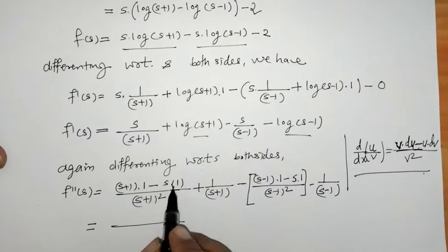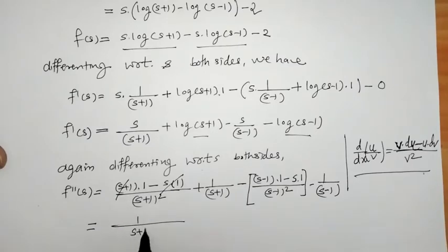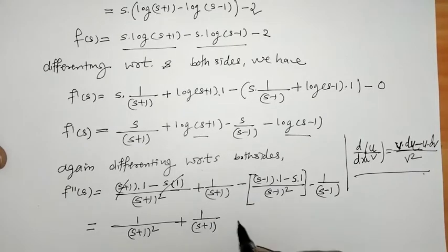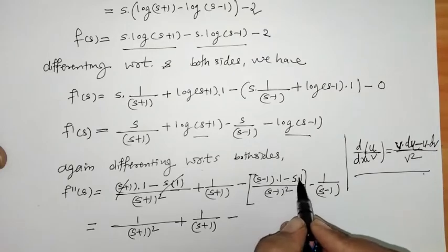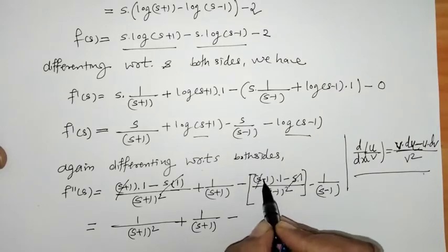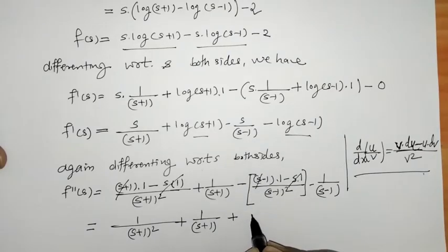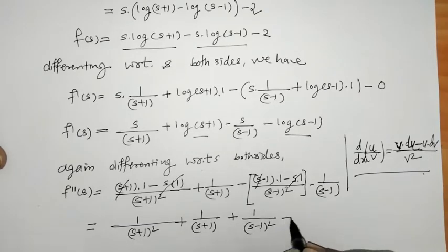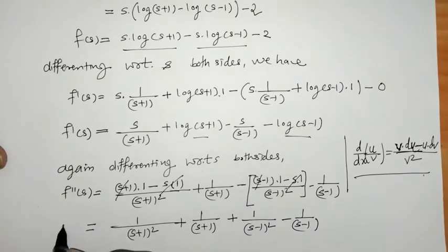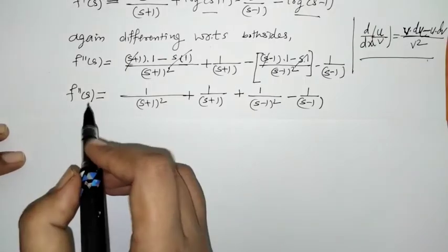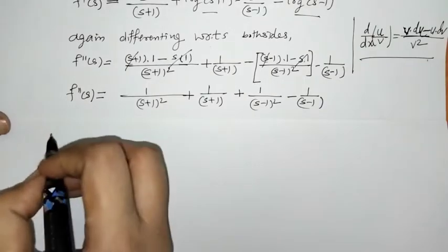Now we can simplify. The s terms cancel, giving 1/(s+1)² plus 1/(s+1). Same here: the terms cancel and minus minus becomes plus, so we have 1/(s-1)² minus 1/(s-1). So we have obtained f''(s).